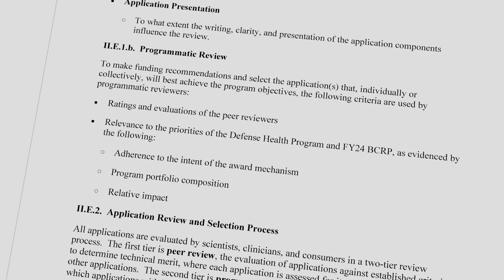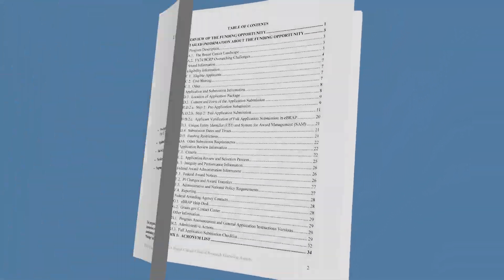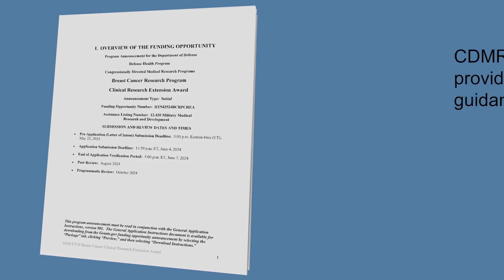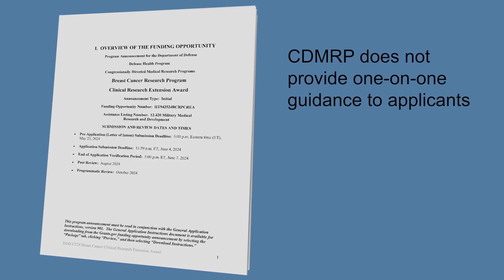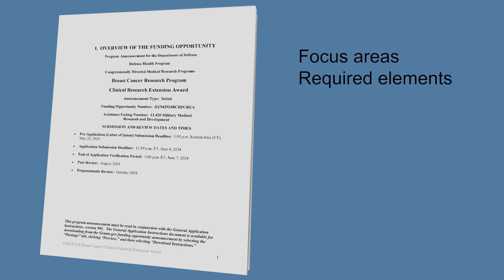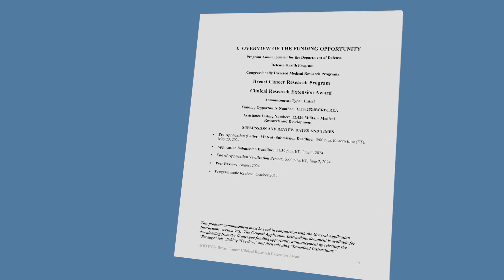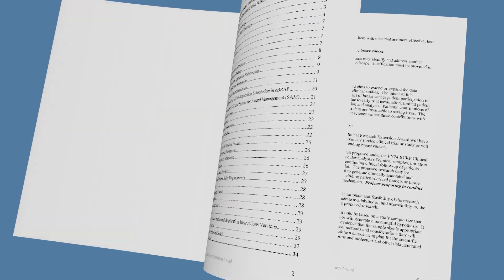The single most important tip about applying to funding from the CDMRP is to carefully read the entire funding opportunity and the associated general application instructions. CDMRP does not provide one-on-one guidance to applicants, such as whether their research is something the program is interested in funding. Rather, CDMRP develops the funding opportunity and general application instructions to contain all the information applicants need to address in their applications, such as focus areas, required application elements, eligibility, and deadlines. All applicants receive the same information, and CDMRP will not provide any additional guidance regarding the content of your application.